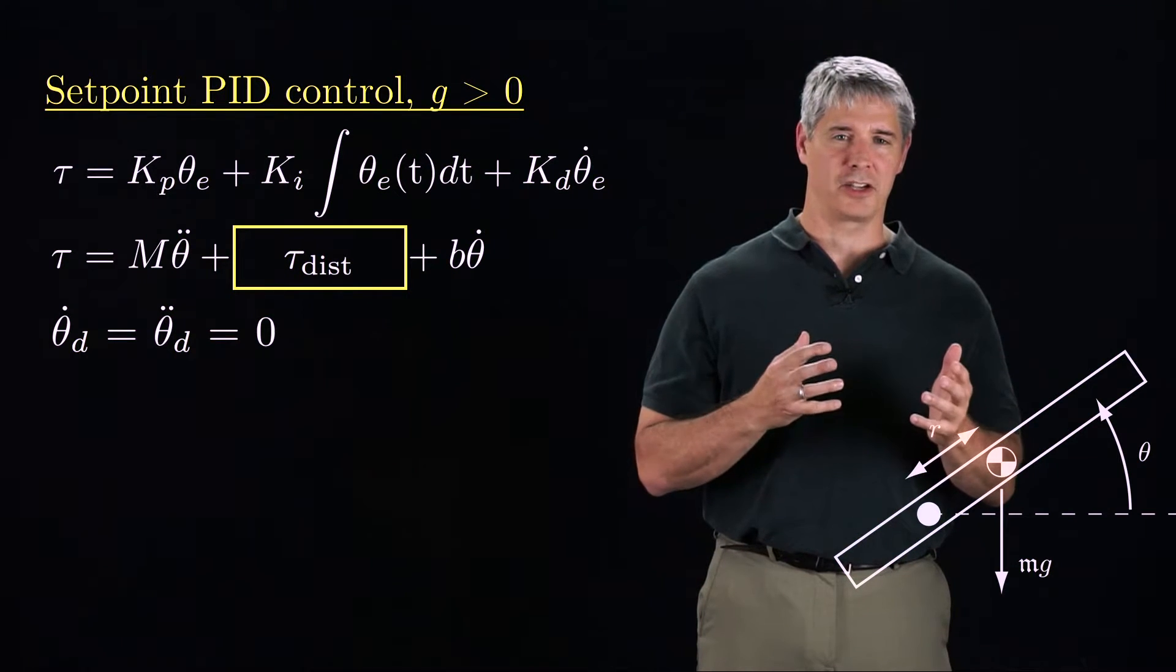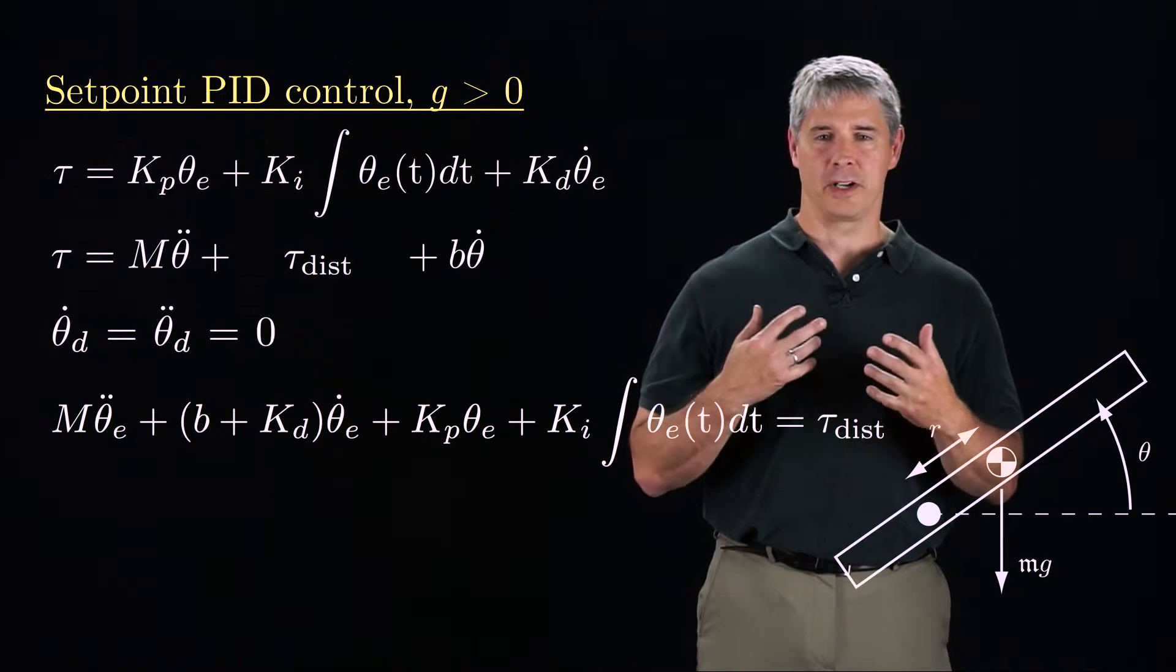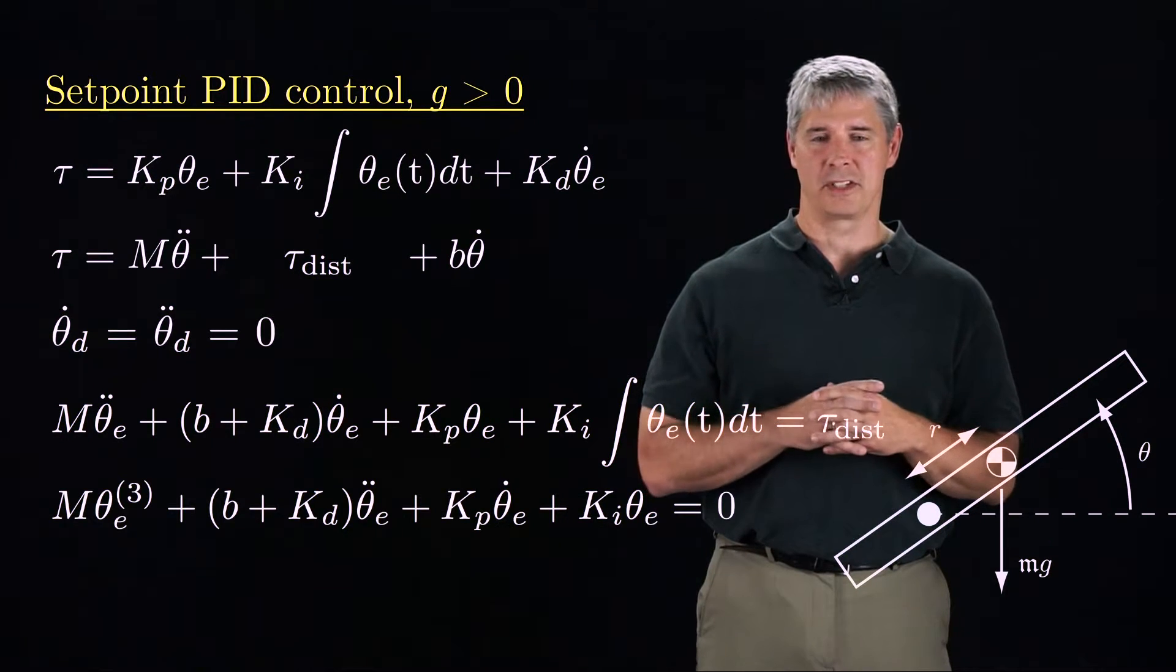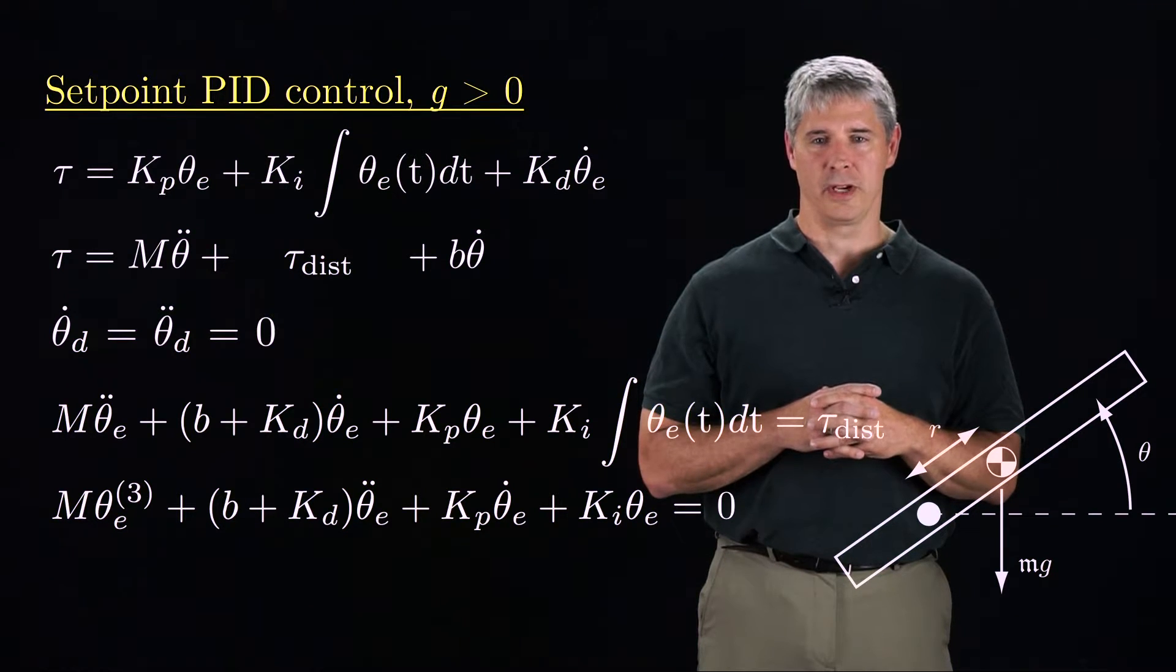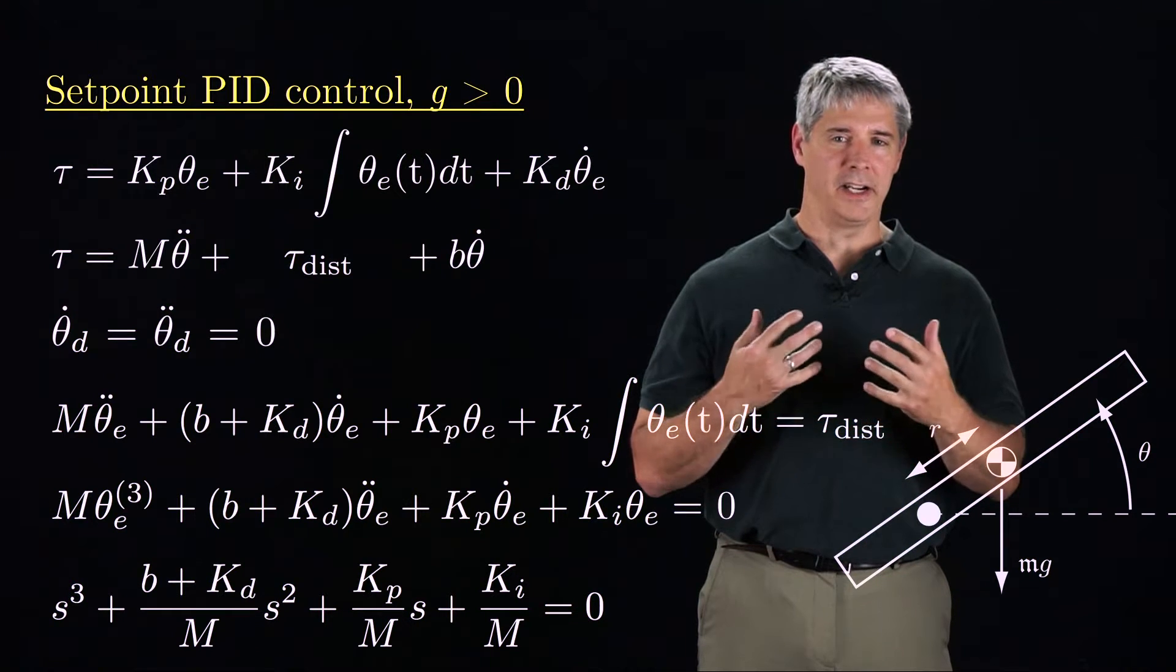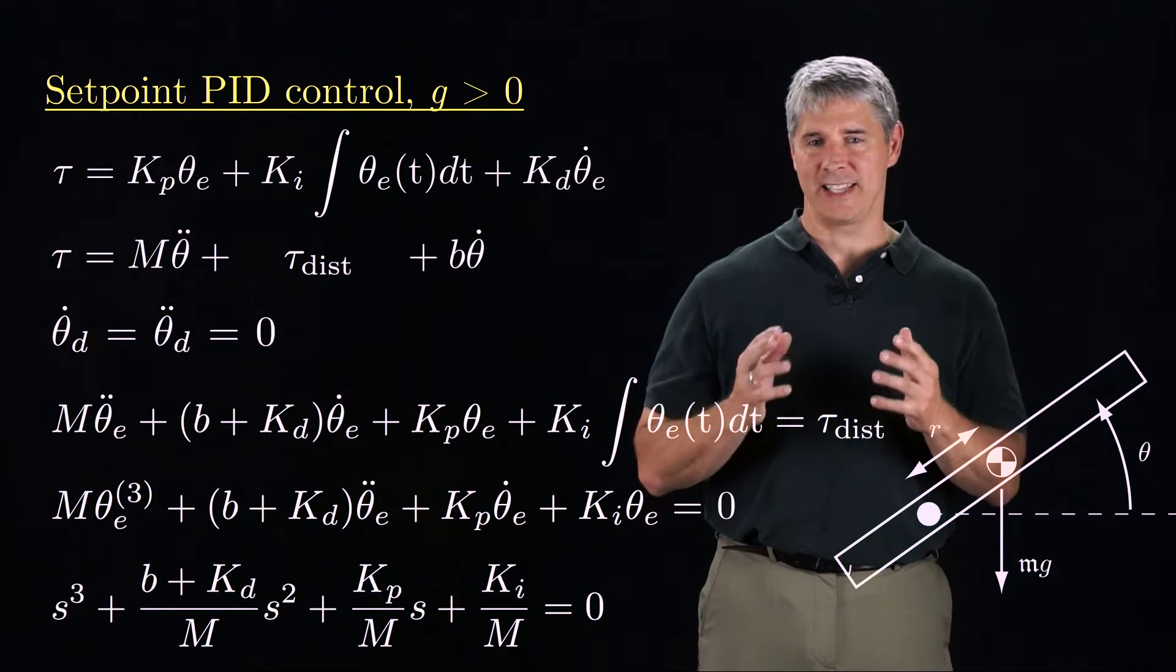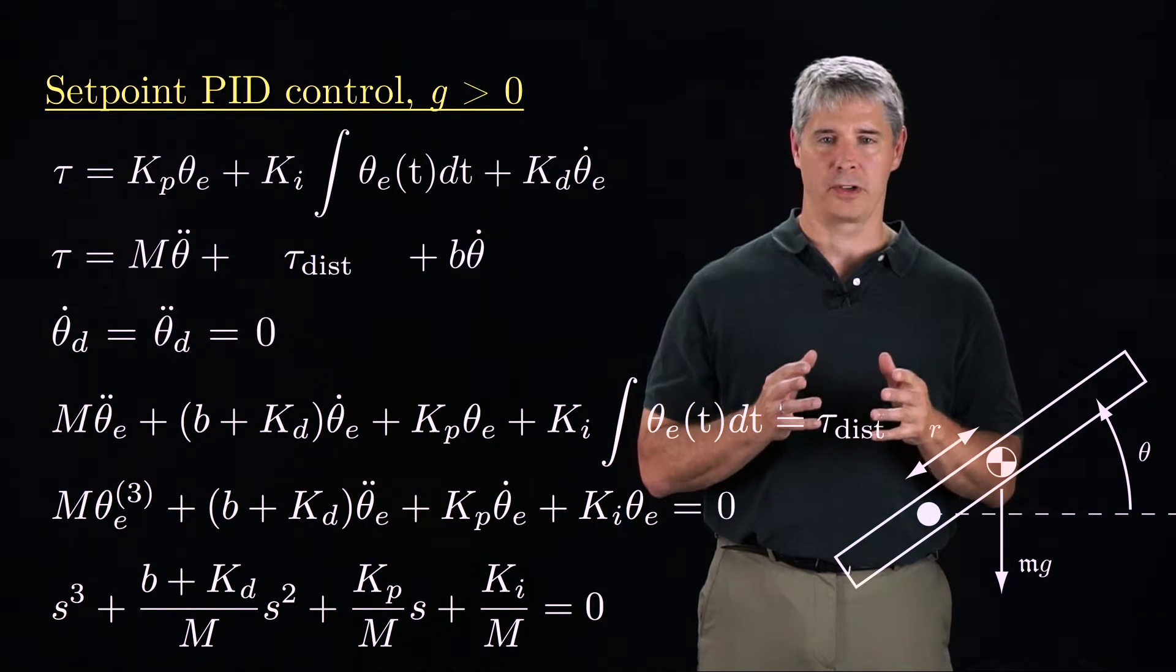Equating the dynamics in the control torque, we get the error dynamics. To get a differential equation, we can differentiate both sides. The result is a homogeneous third-order differential equation with this characteristic equation. By adding an integral term to the controller, we added a state to the dynamics, increasing the order of the differential equation from second order to third order.